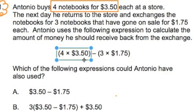Then it says the next day he returns to the store and exchanges three notebooks that have gone on sale for $1.75. So this portion of the problem right here, this part right here, three times $1.75, this represents the three notebooks that he bought on sale for the price of $1.75 each.